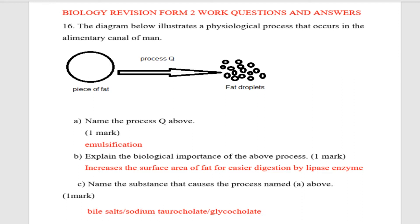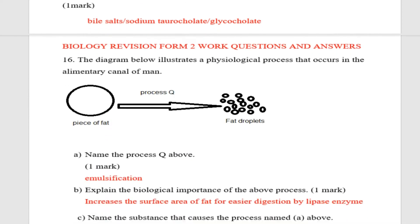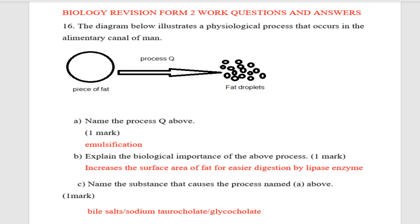Question number sixteen: the diagram below shows the last process that occurs in the alimentary canal of a man. You can see a piece of fat, process Q, and then fat droplets. You are told to name process Q — that is emulsification, the process of breaking down fat into droplets. Part b: explain the biological importance — breaking fat into smaller droplets is to increase the surface area of the fat for easier digestion by lipase enzyme.